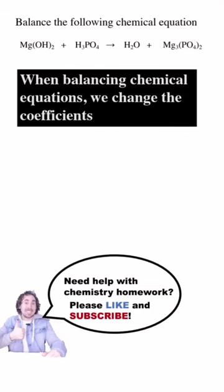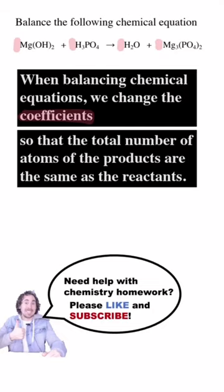When balancing chemical equations, we change the coefficients so that the total number of atoms of the products are the same as the reactants. Coefficients multiply the formula they're in front of.